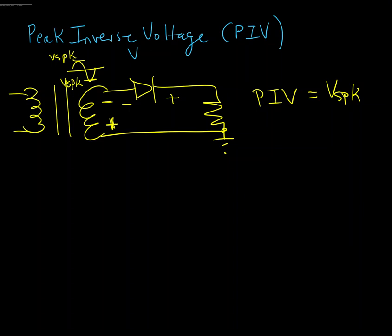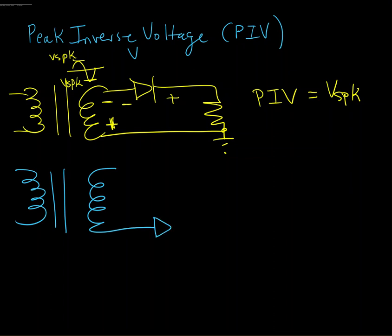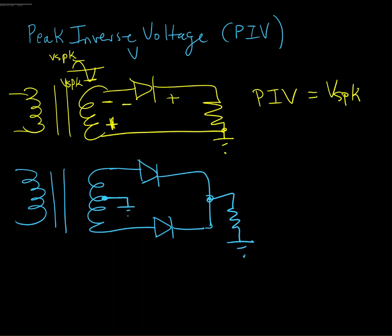For the center-tapped configuration, remember the center-tapped has two diodes going to the load resistor and then back to the center tap of the transformer. When the diode is reverse biased, the voltage polarity across that diode looks like this.